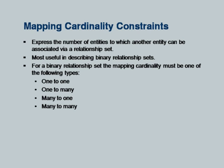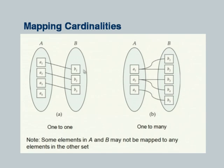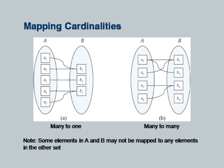Cardinality constraints play a very important role in ER modeling and in how we convert the ER model to the relational model. A one-to-one mapping means each entity here maps to at most one entity there and vice versa. Note that some entities may not be mapped, which is okay unless the mapping is total. In one-to-many, one entity here can be mapped to multiple entities there, but on the other side each maps to at most one.